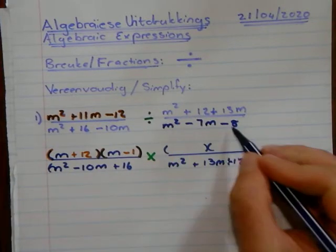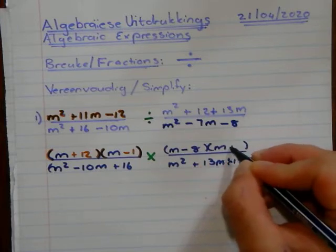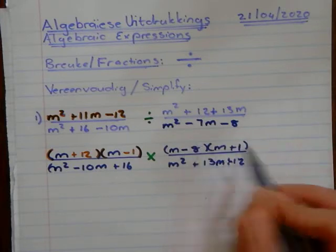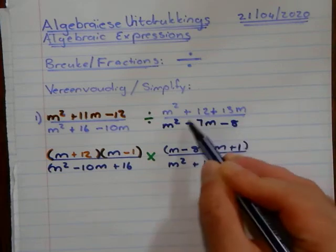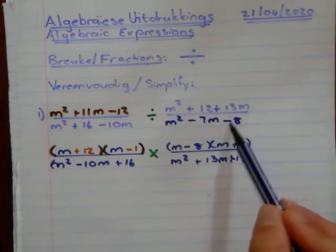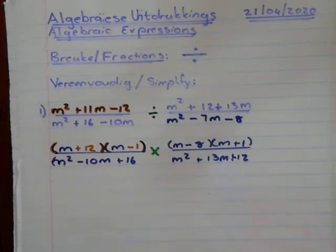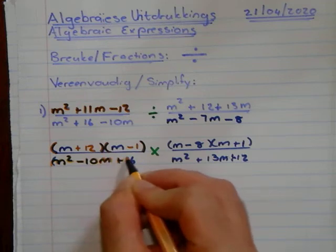Now we're going to factorize this one. M minus 8M plus 1. Why? Negative 8 times 1 is negative 8, minus 8 plus 1 is negative 10. Minus 8 times 1 is minus 8, minus 8 plus 1 is minus 7.